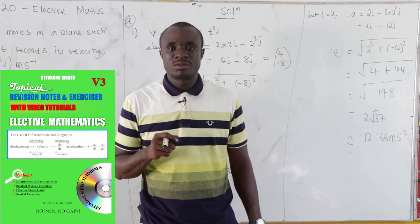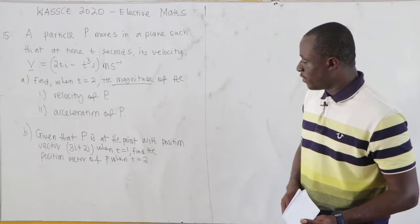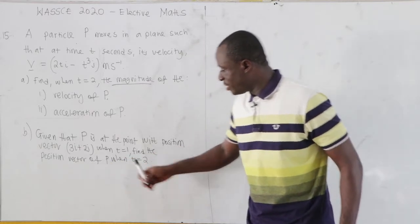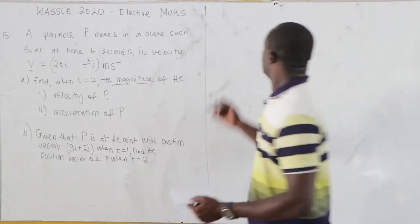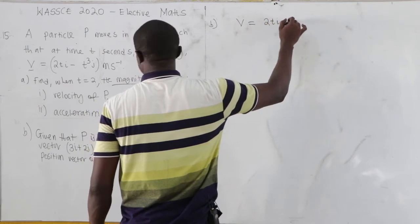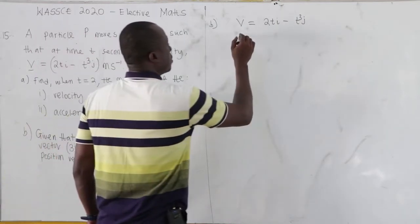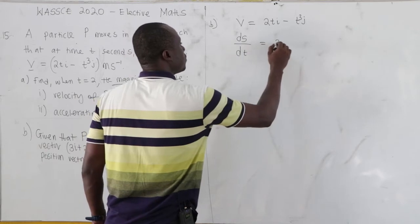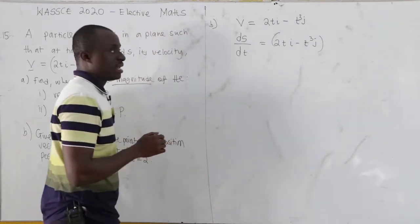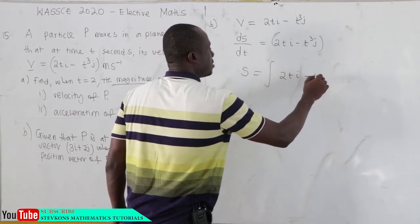The next part says: given that P is at the point with position vector 3i plus 2j when t equals 1, find the position vector of P when t equals 2. Velocity equals 2ti minus t³j, and velocity is the rate of change of displacement with time, so we integrate.